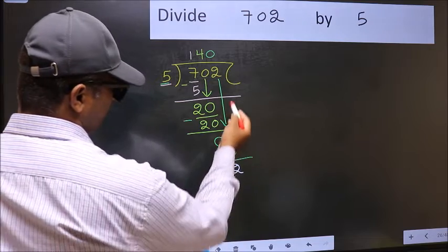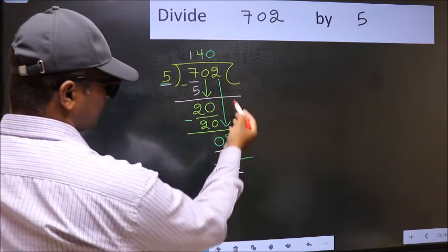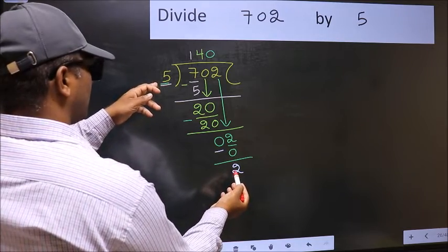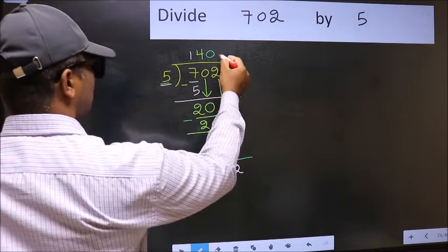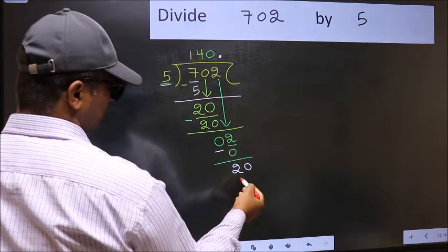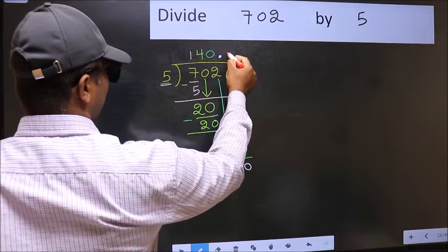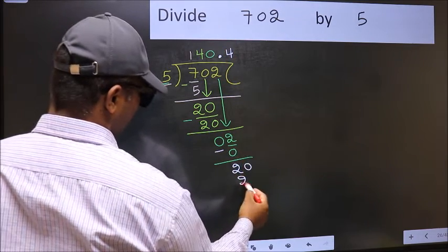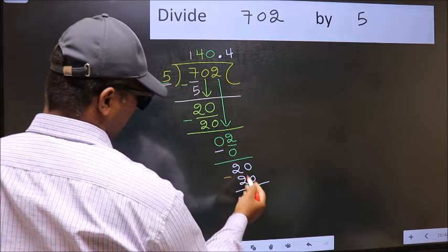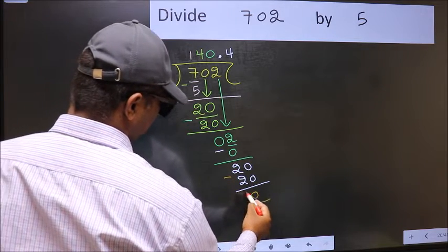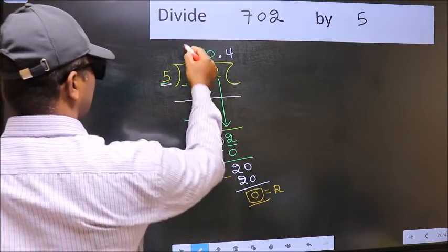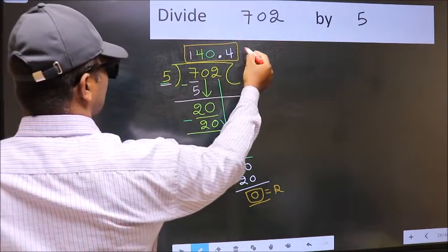Over here, we did not bring any number down. And 2 is smaller than 5. So now you can put dot and take 0. So 20. When do we get 20 in 5 table? 5 fourths, 20. Now you should subtract. 20 minus 20 is 0. So this is our remainder and this is our quotient.